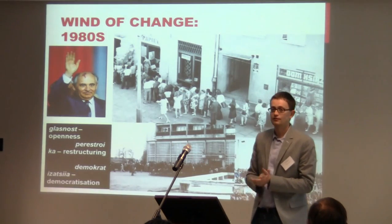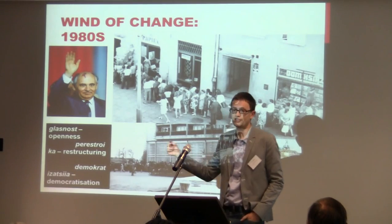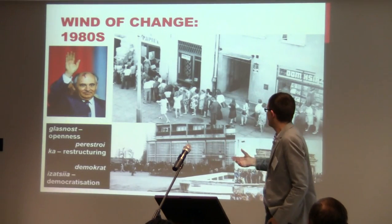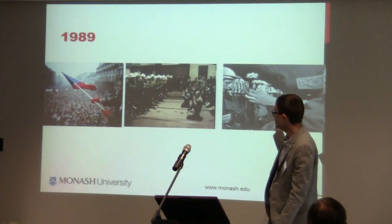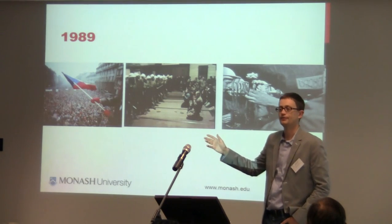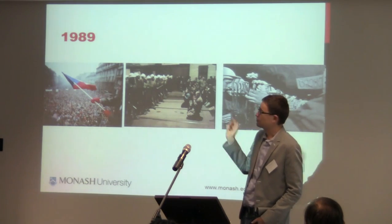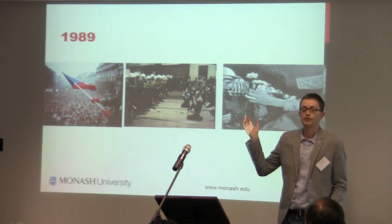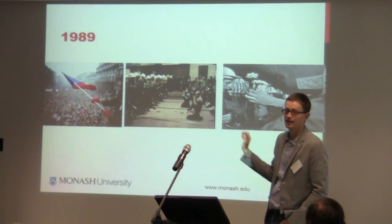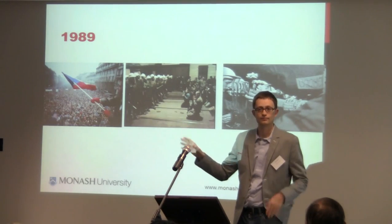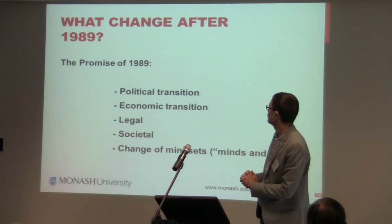Then you saw Mikhail Gorbachev coming to the scene with his openness, restructuring, and democratization, which indeed led to the fall of the Berlin Wall and to the fall of the other Central and Eastern European regimes as well. There was not much violence — interesting compared to some other revolutionary years we've seen since. But that's not entirely true; for example, in Romania there was a lot of violence during the revolution.